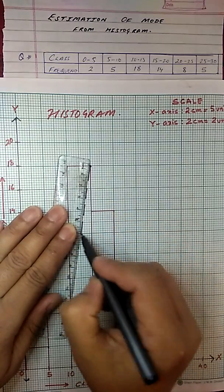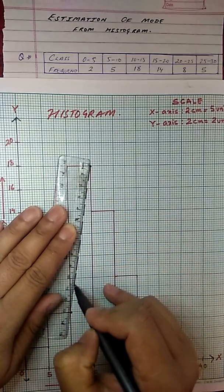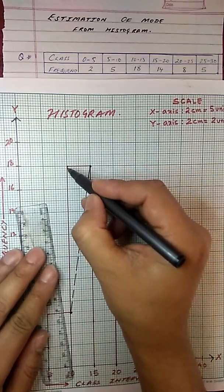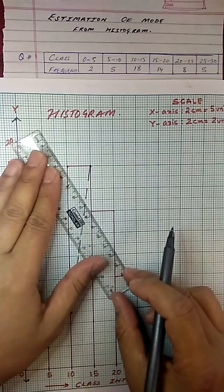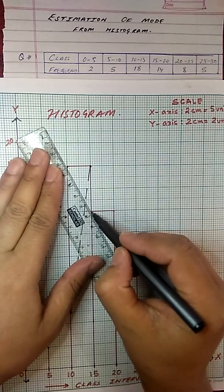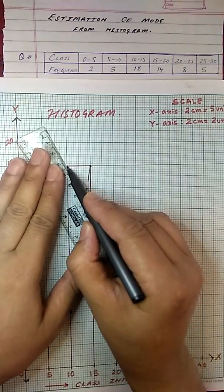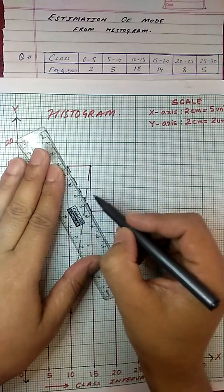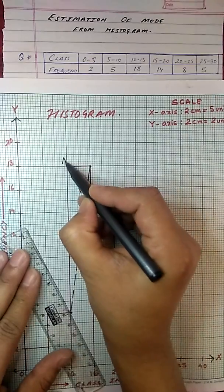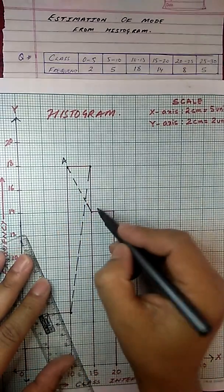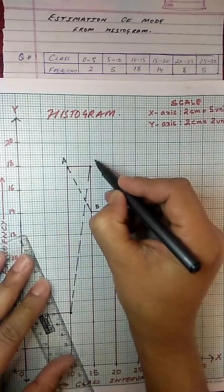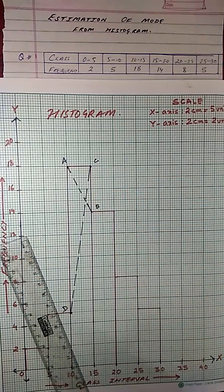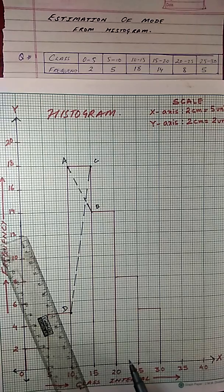I am using broken lines. Similarly, suppose if this is the peak corresponding to the other one, then we will draw lines like this. Suppose this is A, then this is B, then AB and CD are two lines which are drawn from the peak of the modal class.